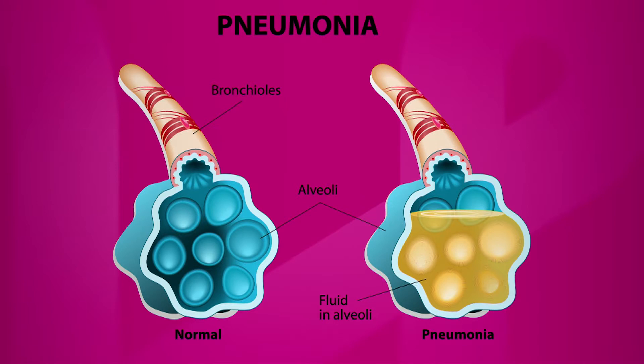These are the alveoli — the air sacs — where air comes in, gets exchanged, and enters our bloodstream. When there's an infection, unfortunately there's inflammation in the bronchioles, and air cannot get in. Not only that, there's fluid accumulation because of the bacteria.